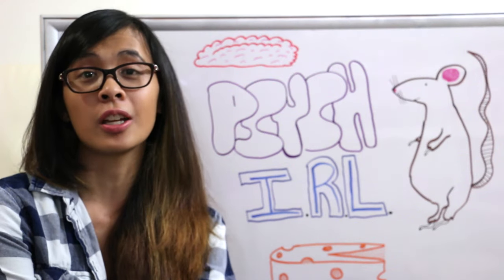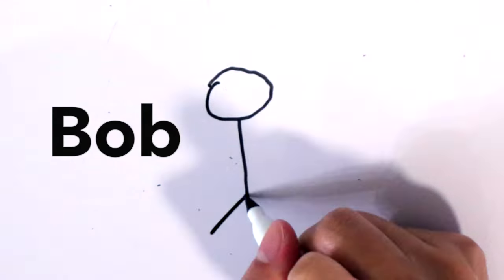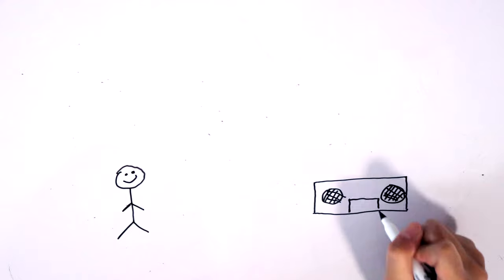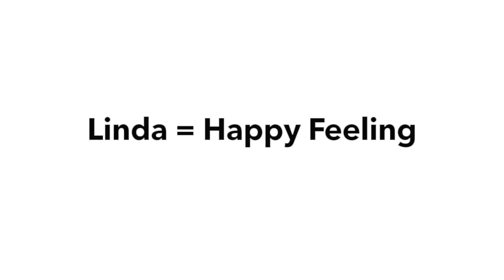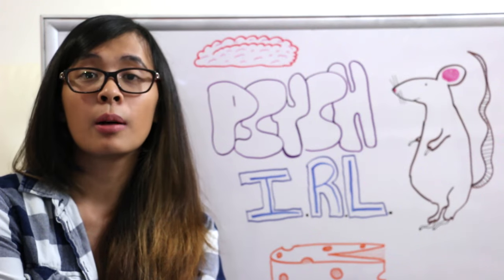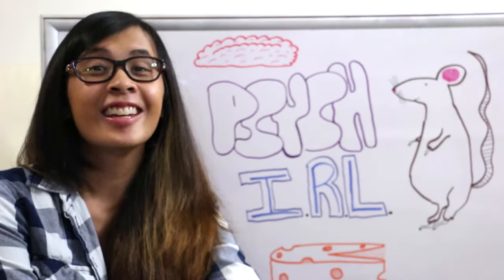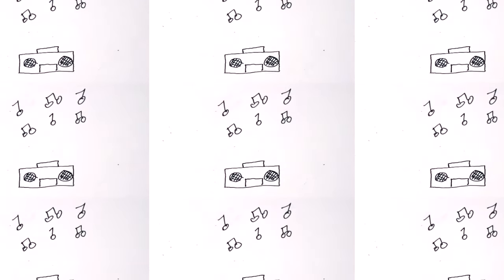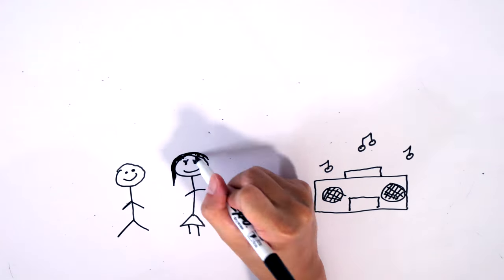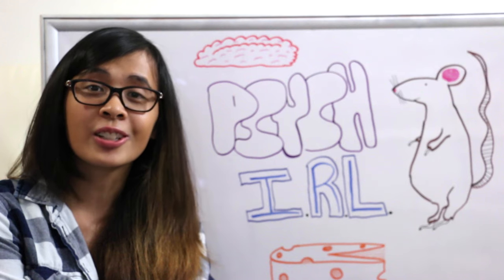Let's review classical conditioning. Classical conditioning is the association of stimuli. Meet Bob. Bob hears a song — he doesn't think it's bad, he doesn't think it's good. All of a sudden, Bob meets Linda. They fall in love and get together. Linda gives Bob this happy feeling. One day, Linda says to Bob, hey Bob, we should make this song our song. He agrees. And so now every time that song comes on the radio, it gives him a happy love feeling. In summation, the song gives him the happy feeling because it's related to Linda. Classical conditioning.